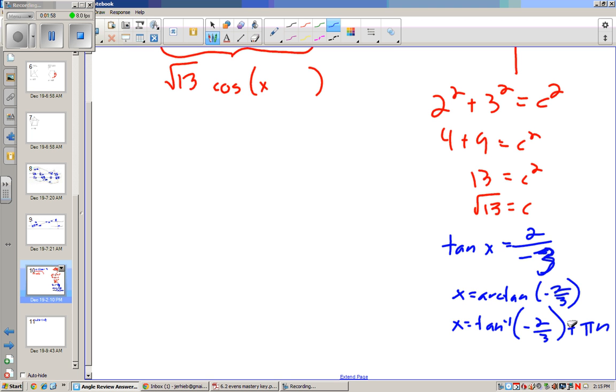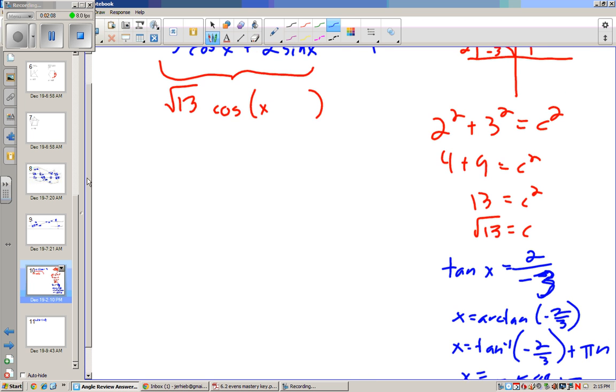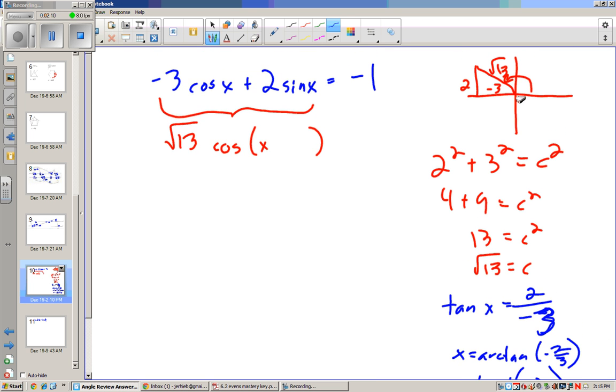And that answer is negative 0.588. Now negative 0.588 radians is a little tough to conceptualize, but negative 0.588 is actually right here.